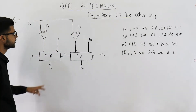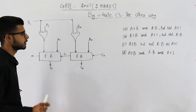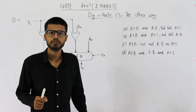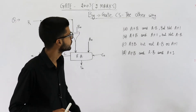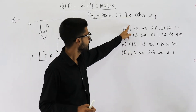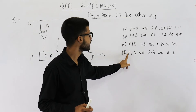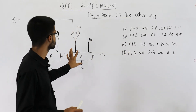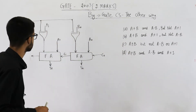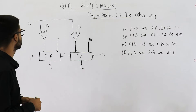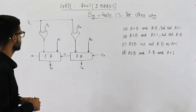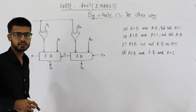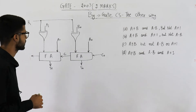We have two full adders, which means we can perform addition of a and b. You can see all of the options contain a plus b, so a plus b is always present in our answer. But let us still see what values of k and c-naught are needed for performing addition.